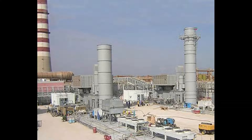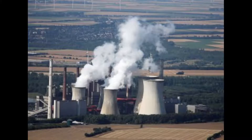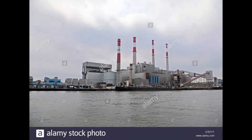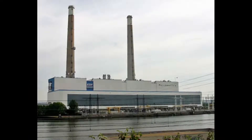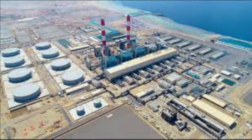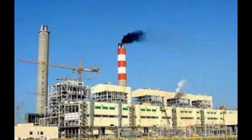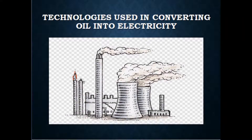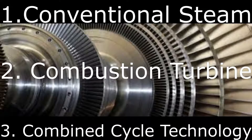Power plants that burn oil to produce electricity are called oil-fired power plants. They are no different in general principle and operation from their fossil-fueled cousins, the coal-fired and natural gas-fired power plants. There are three technologies that are used to convert oil into electricity: conventional steam, combustion turbine, and combined cycle technology.